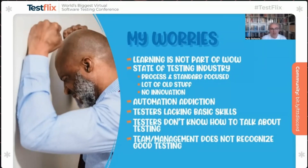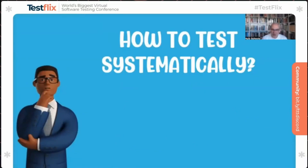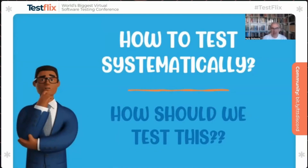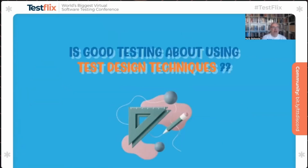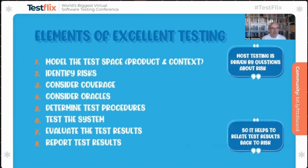Teams and management do not know how to recognize good testing. How do you test systematically, or how should we test this? This is one of the most important questions a tester has to answer. Sometimes I hear we need good test design techniques like boundary value analysis or equivalence partitioning — that's true, but it's only a small part. There are many techniques that aren't taught that I think are very important.